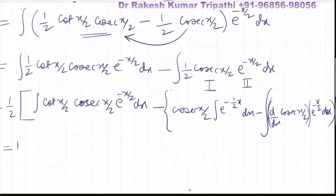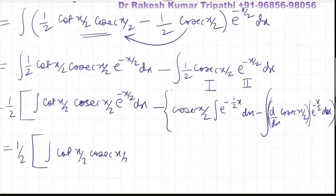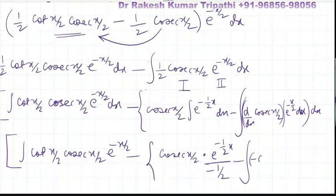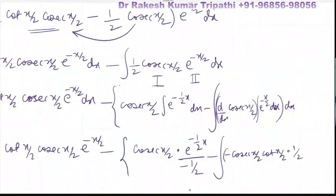So the integral equals (1/2) common: the first part cot(x/2)·cosec(x/2)·e^(-x/2) minus cosec(x/2) × [e^(-x/2) / (-1/2)] minus [derivative of cosec(x/2) = -cosec(x/2)·cot(x/2) × (1/2)] × [e^(-x/2) / (-1/2)]. The two minus signs cancel each other and the 1/2 factors cancel.